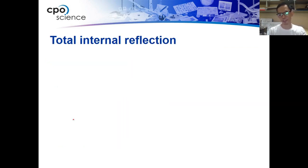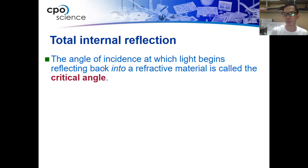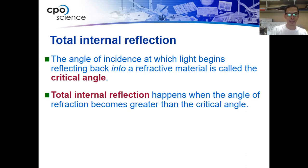What is total internal reflection? Total internal reflection happens when the angle of incidence at which the light begins reflecting back into the refractive material is called the critical angle.